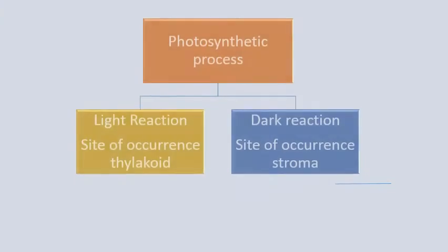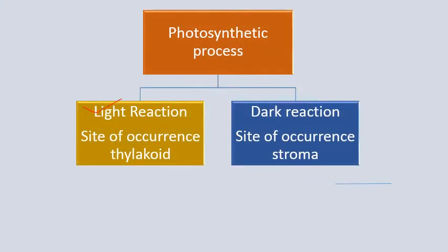The photosynthetic process consists of two parts. One is the light reaction, which occurs in the thylakoid of the chloroplast, and its main function is formation of ATP and NADPH, which is a chemical form of energy. This energy is then used in the light-independent reaction, also called the dark reaction.